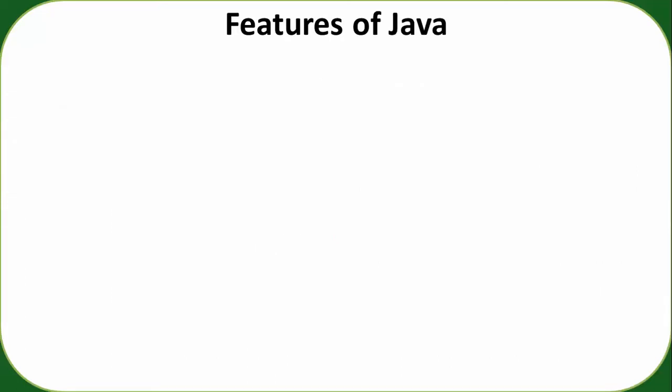The features of Java were designed in 1995 when C and C++ programming languages were widely used. C was a procedural-oriented language, but C++ was a partially object-oriented programming language. C and C++ were not secure, whereas Java is one of the most secure programming languages.